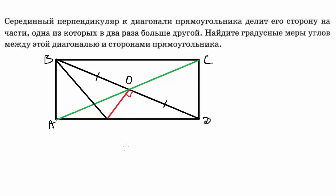Обозначим эту точку буквой N. По условию серединный перпендикуляр делит сторону AD на части, одна из которых в два раза больше другой. Если AN = x, то ND = 2x.